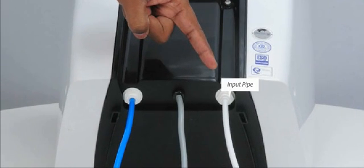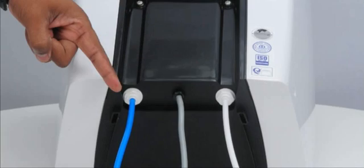This is the input pipe where water to be filtered enters from the tap. This is the rejected water outlet.